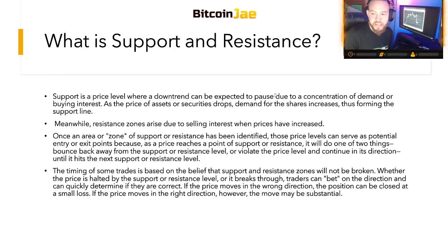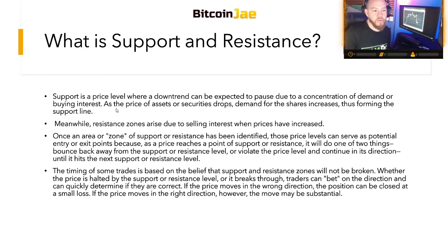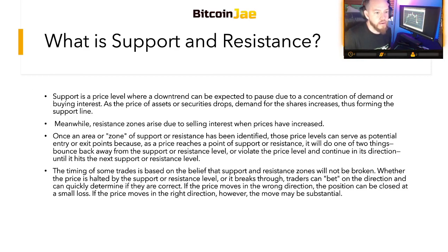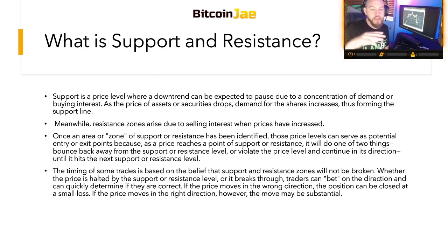Support is a price level where a downtrend can be expected to pause due to a concentration of demand or buying interest. As the price of an asset drops, demand for the shares increases, thus forming the support line. Basically when it gets to a certain price level where there's a lot of support, a lot of people start buying, which increases the volume going up — that's what holds the price there and bounces it back up. For example, Bitcoin currently at $10,000. Meanwhile, resistance zones arise due to selling interest — for example at $12,000, we've been rejected multiple times because every time we get there there's a lot of selling, which pushes prices back down.